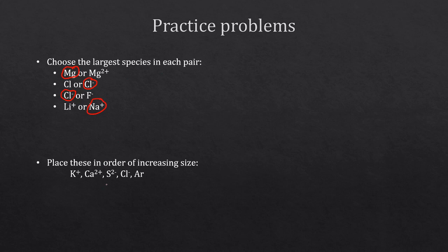For the ordering question, it helps to check that all species have the same number of electrons — all of these end up with 18 electrons each. Since they all have 18 electrons, the only thing affecting size is the number of protons. Fewer protons means bigger; more protons means smaller, because more protons pull the electrons in more. Calcium two plus has 20 protons — more than all the others — but still only 18 electrons, so calcium two plus is our smallest.